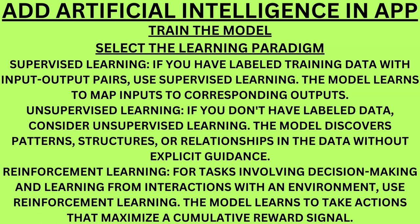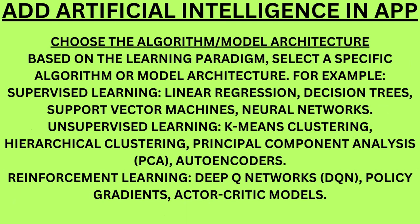Train the model. Select the learning paradigm. Supervised learning: if you have labelled training data with input-output pairs, use supervised learning — the model learns to map inputs to corresponding outputs. Unsupervised learning: if you don't have labelled data, the model discovers patterns, structures, or relationships without explicit guidance. Reinforcement learning: for tasks involving decision-making and learning from interactions with an environment — the model learns to take actions that maximize a cumulative reward signal.